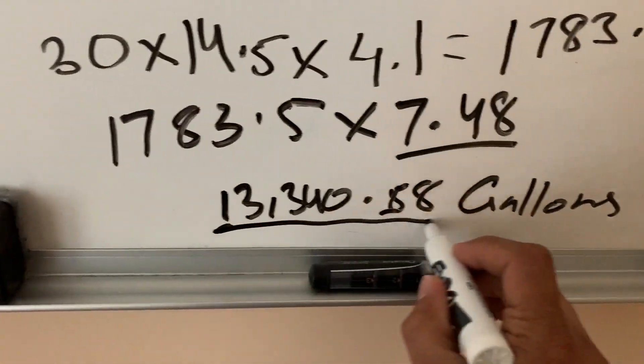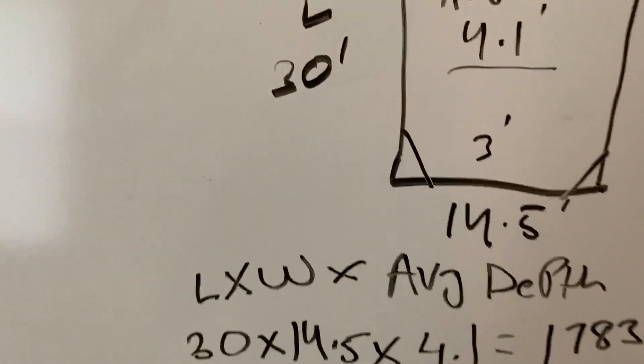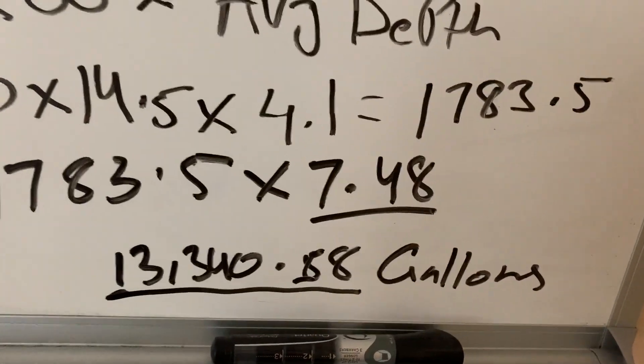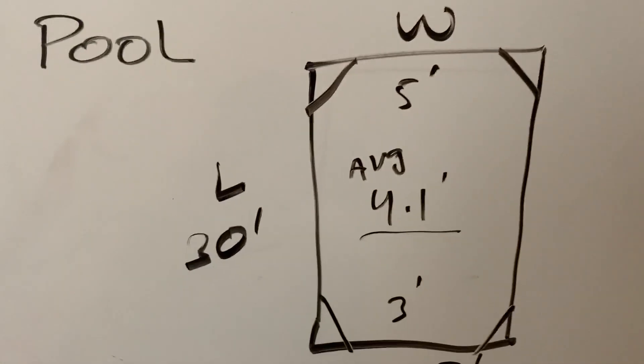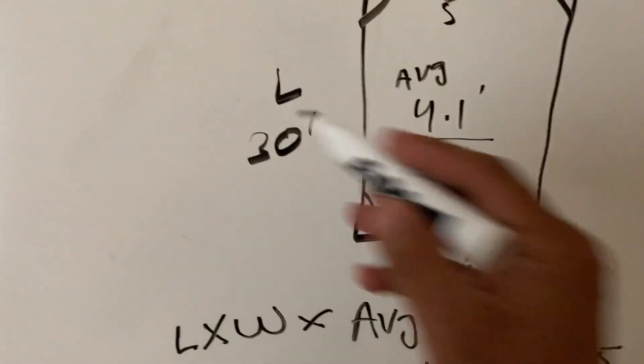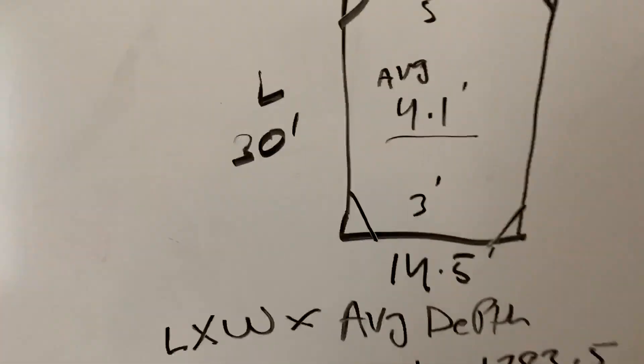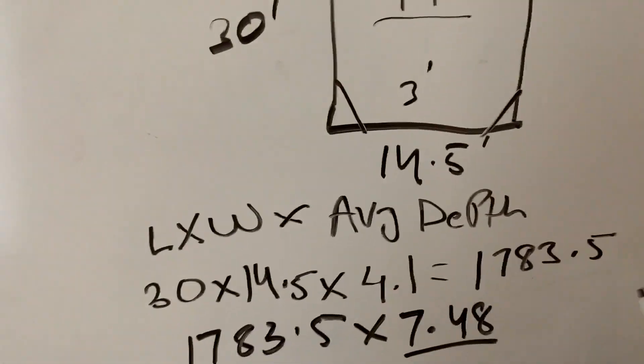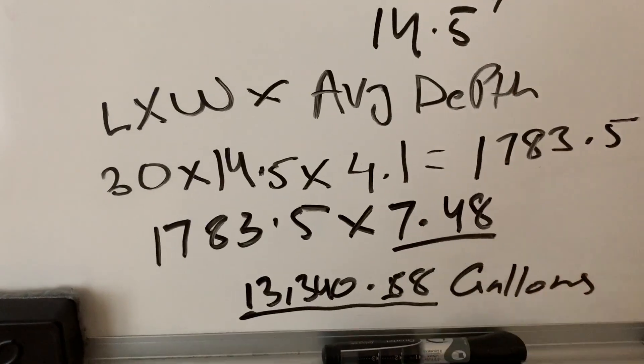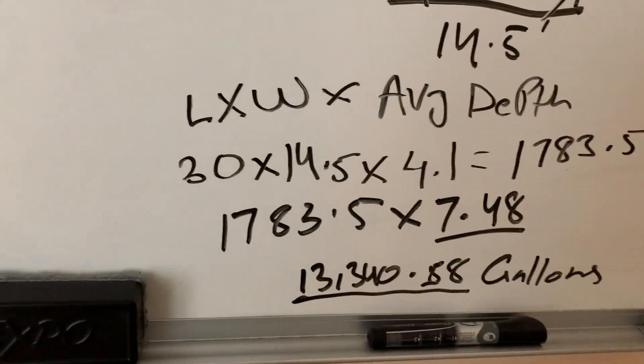So this is how much my pool holds. It's not 100% accurate but very close to what your pool is holding. Again, length times width times average depth gives you the cubic feet of water, and times that by 7.48, which is the gallons in one cubic foot, and that will give you the gallons of water.